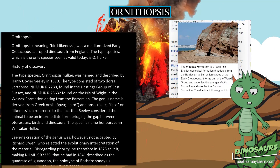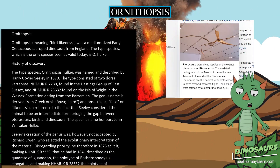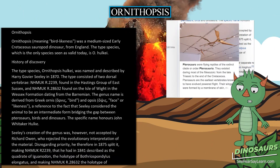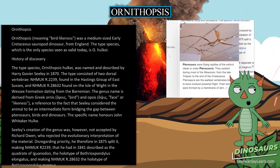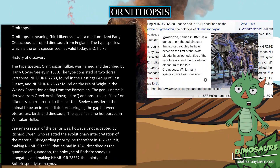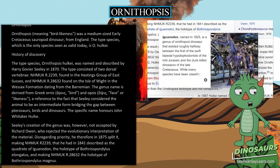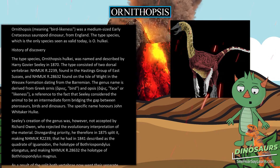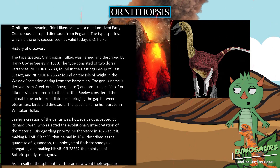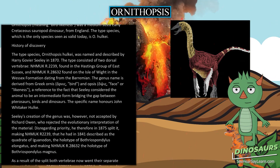The genus name is derived from Greek ornis, meaning 'bird,' and opsis, meaning 'face' or 'likeness' — a reference to the fact that Seeley considered the animal to be an intermediate form bridging the gap between pterosaurs, birds, and dinosaurs.